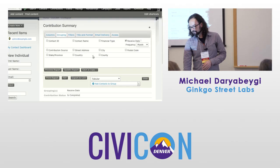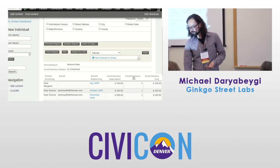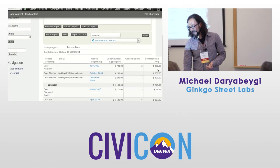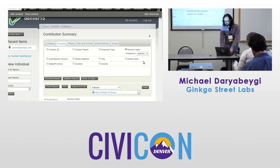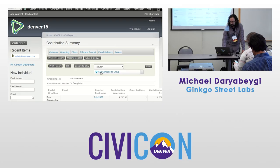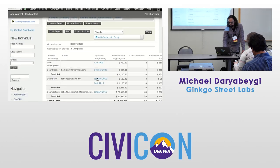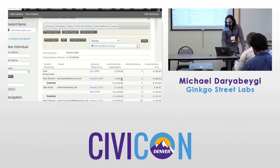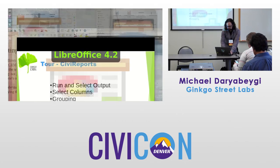Grouping: you can see it's grouping by receive date and month. You can change this to weeks, quarters, or years, and we have aggregates here — total contributions, averages — affected by your grouping. We have a month display here. If we want to zoom out and do quarters... quarter beginning, so the month the quarter starts on. Pretty self-explanatory. If you wanted to change something by city or zip code, that's clear too.